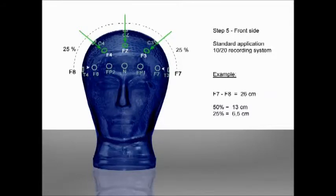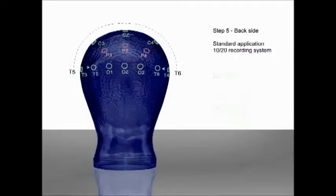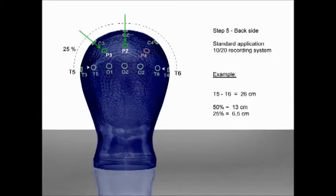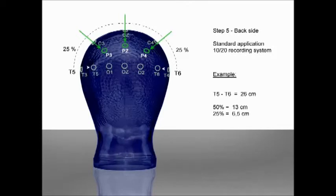For the final line, place the measuring tape at point T5 and run it over the intermediate mark Pz to point T6. Make the final mark for Pz at the halfway point of the measured distance. Mark P3 at one quarter of the distance from T5, and mark P4 at one quarter from T6. In our example the distance is 26 cm, giving Pz at 13 cm, P3 at 6.5 cm from T5, and P4 at 6.5 cm from T6. This means all marks for the forward and back half of the head have been made. Now we will show you the correct placement of the cap and the connection.